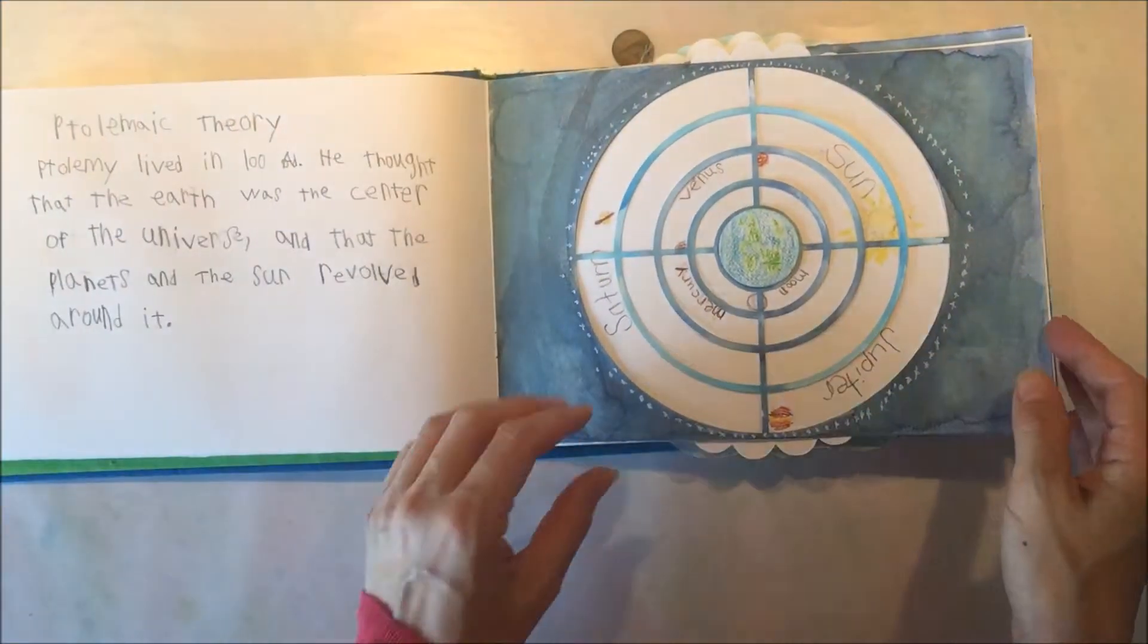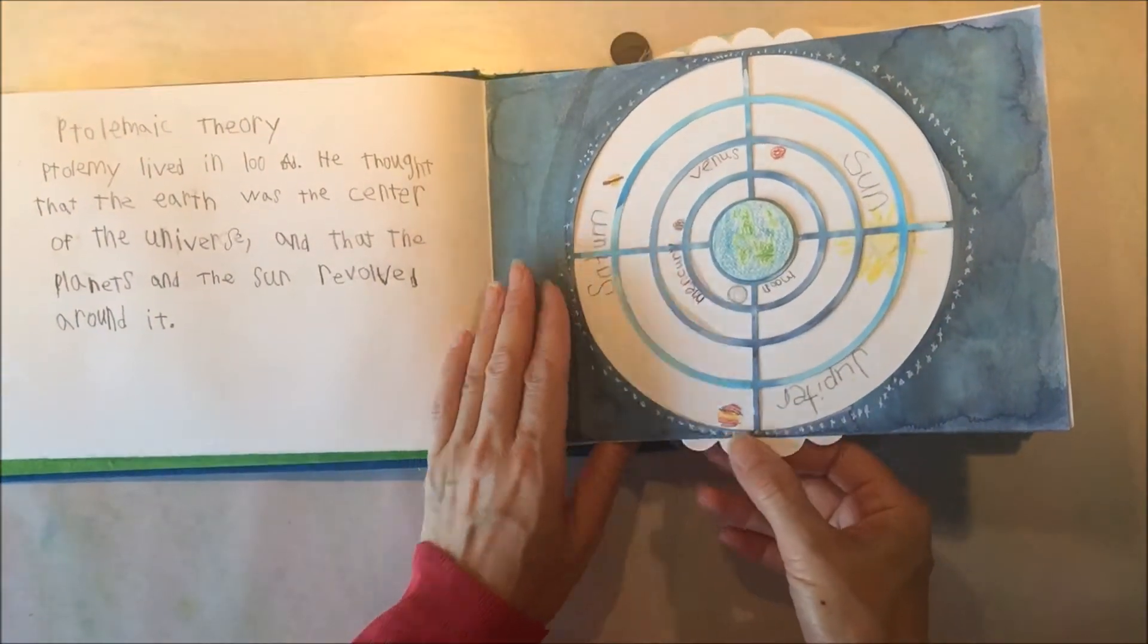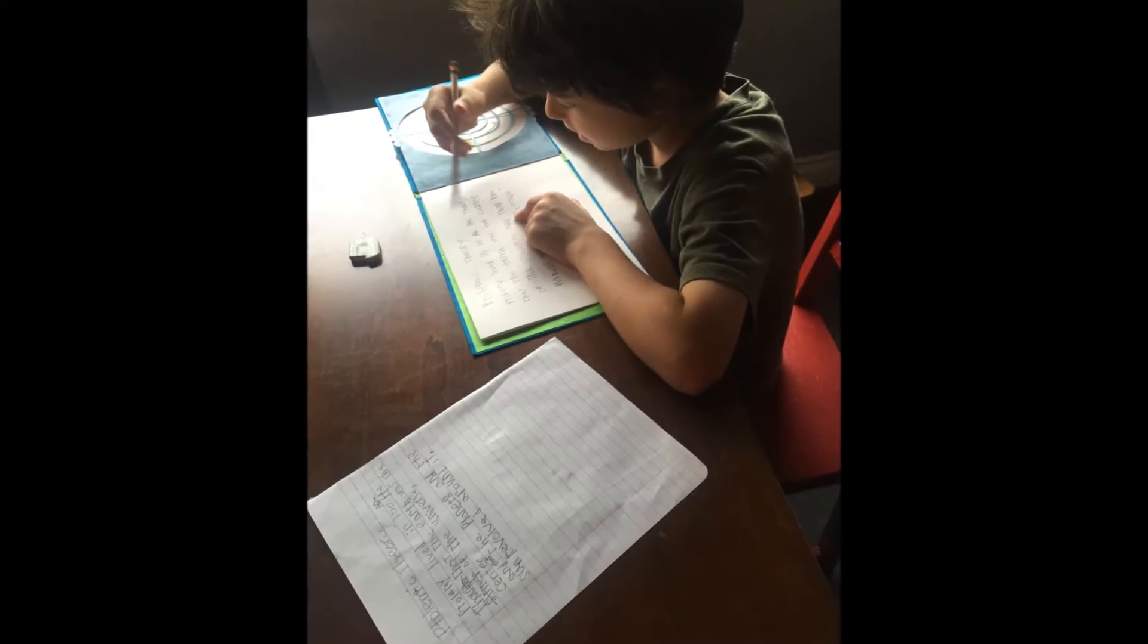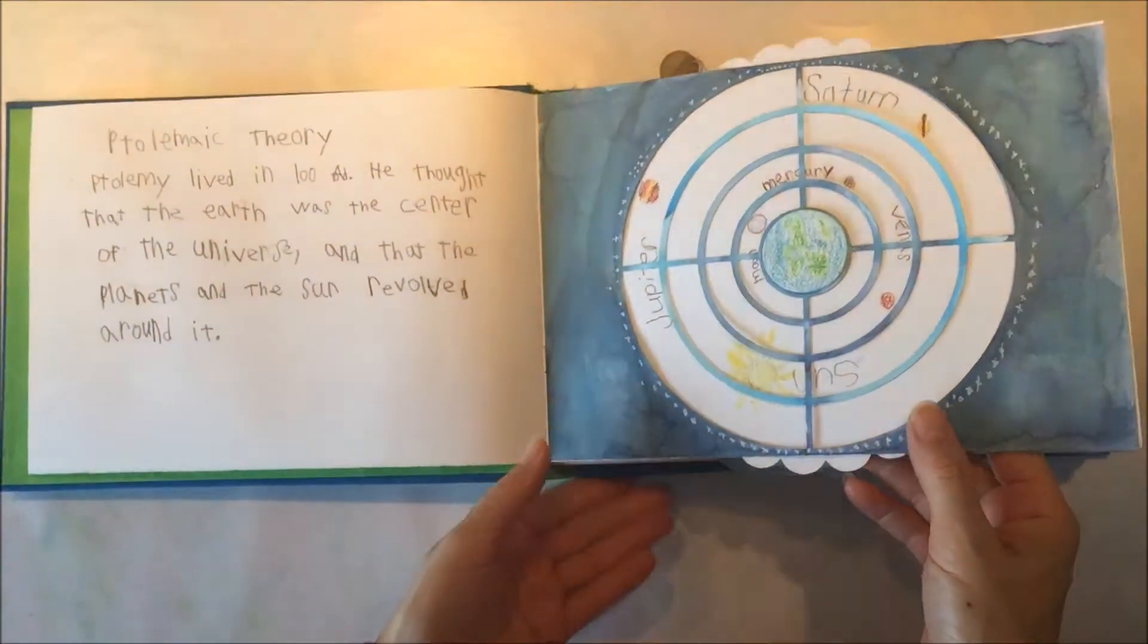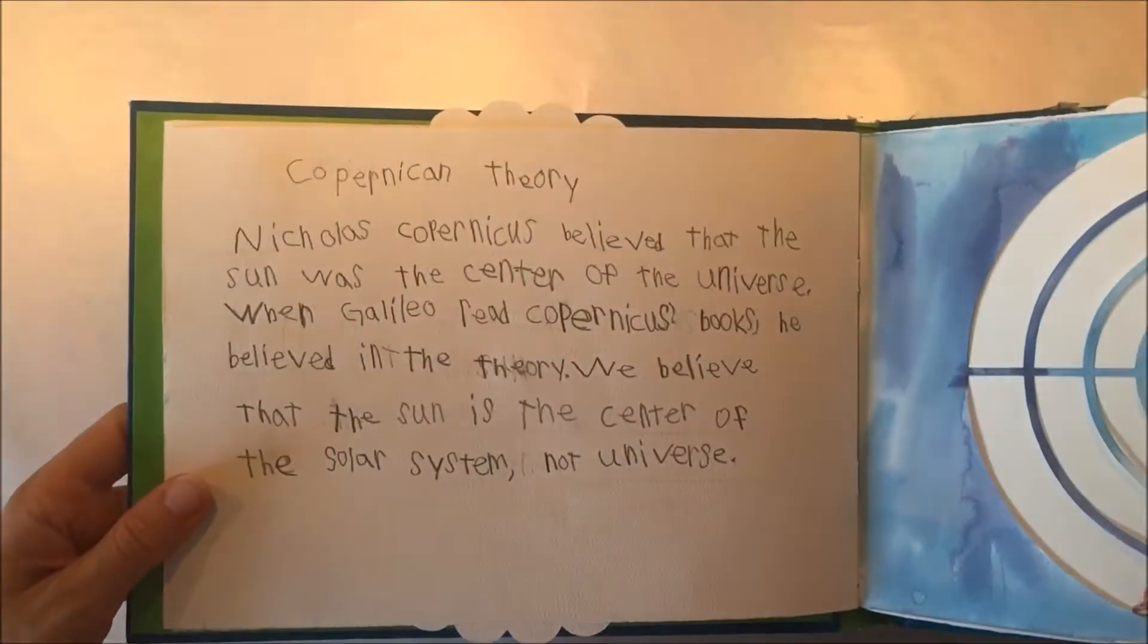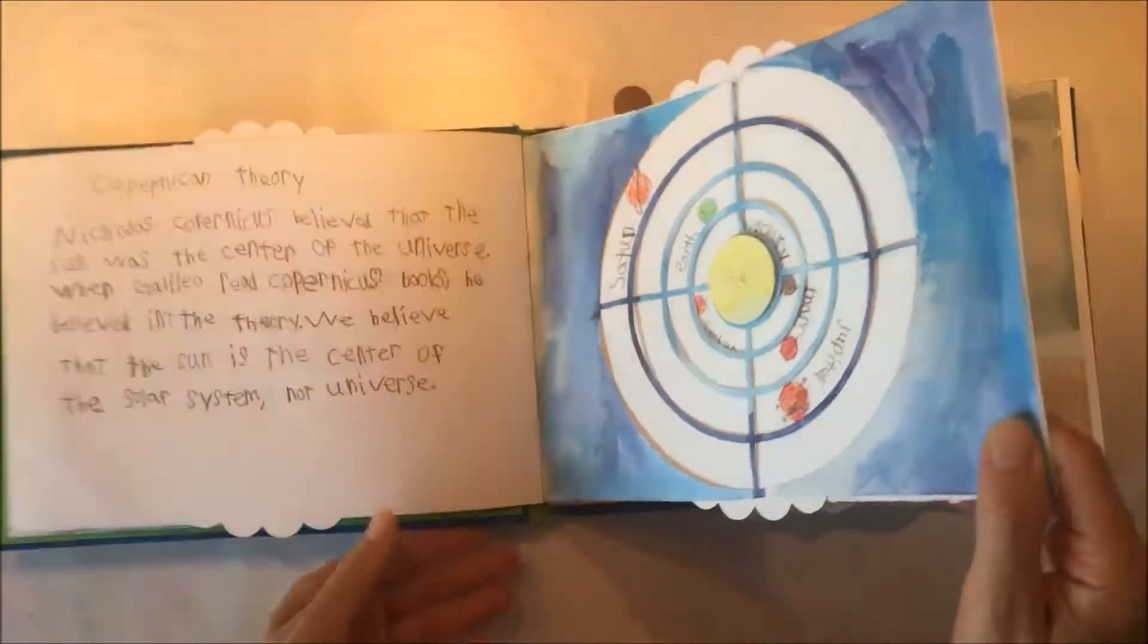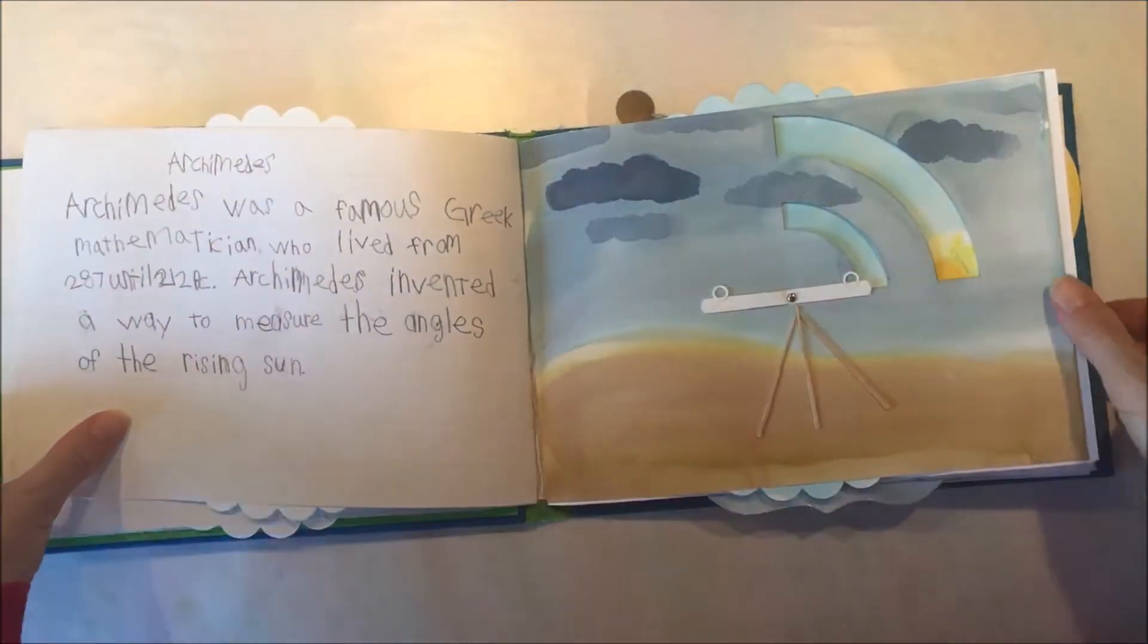So this is the Earth-centered model of the solar system and it is movable. And there are my kids working on that project. And then here is the Copernican model with the sun being in the center. So it was all movable, which was really great fun for the kids.